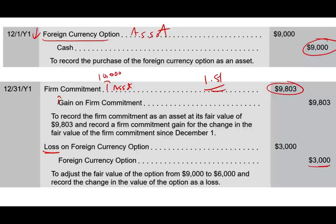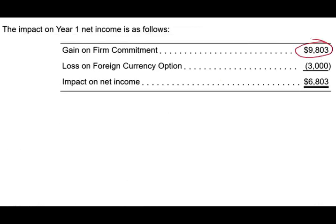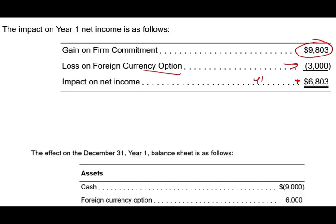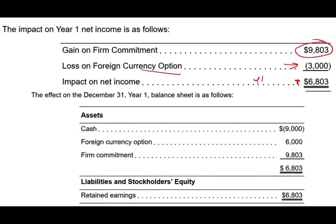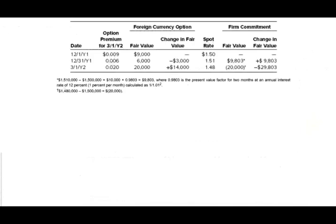Let's summarize the December 31st position. On the income statement: gain on firm commitment $9,803; loss on foreign currency option $3,000 — net $6,803. On the balance sheet: cash is down $9,000 (the premium paid); Foreign Currency Option asset is $6,000 (started at $9,000, reduced by $3,000); Firm Commitment asset is $9,803. Net income flows into retained earnings to balance the balance sheet.